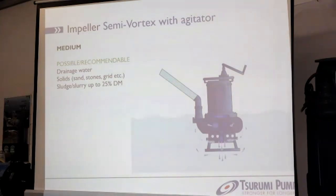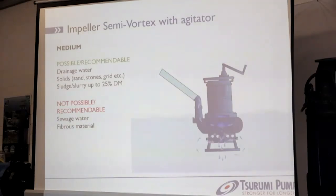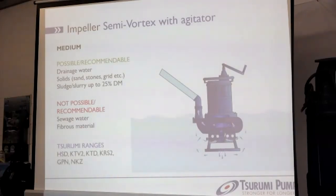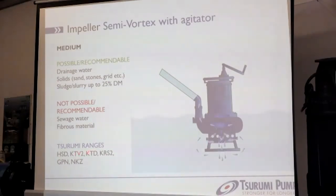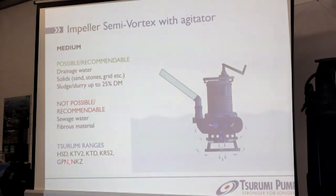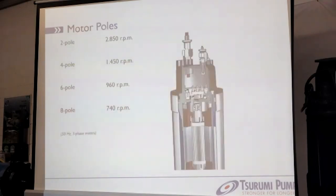Not recommended or possible are sewage medium or fibrous material, because these pumps will clog very fast. Cerumi ranges with agitators begin with the small single-phase HSD, then the aluminium pump with agitator KD2, the KTD based on the KTZ range in grey cast iron, the KRS2, the commonly known KRS series with agitator, the GPM as the one with the biggest dry matter percentage, and the NKZ — a special pump for higher percentages of sand.